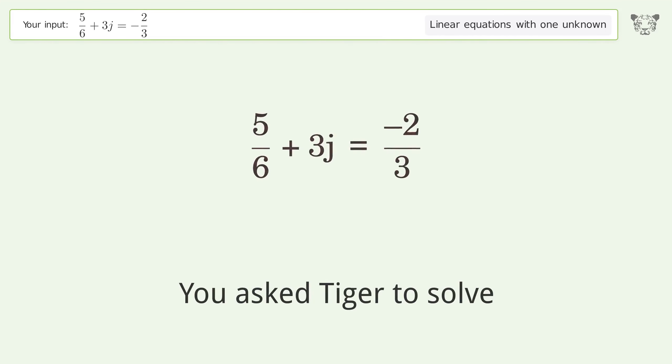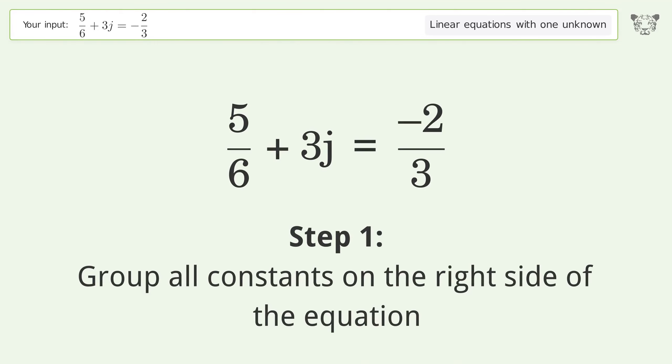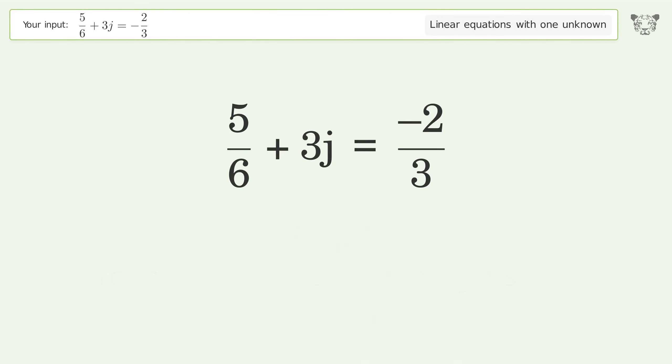You asked Tiger to solve this, which deals with linear equations with one unknown. The final result is j equals negative one over two. Let's solve it step by step. Group all constants on the right side of the equation, subtract